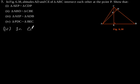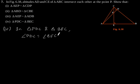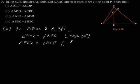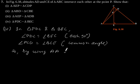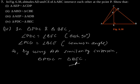In triangle PDC and triangle BEC, angle PDC is equal to angle BEC, both are 90 degrees. And angle PCD is equal to angle BCE, since they are common angles. So by using AA similarity criteria, we can say triangle PDC is similar to triangle BEC. Hence proved.